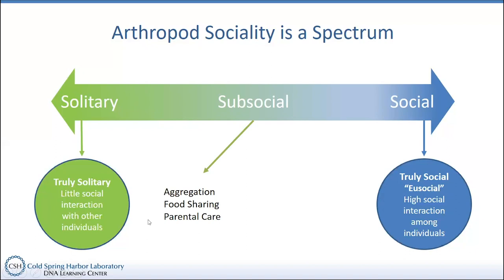Some first behaviors I would place closer to the solitary end of the spectrum include aggregation — basically insects that join together in groups, like some types of cockroaches, but have no other social interaction beyond that. We also have food sharing, where an individual goes out and forages food and other individuals in that aggregation take advantage of that hard work, sharing the food brought back. Then we start seeing parental care develop.